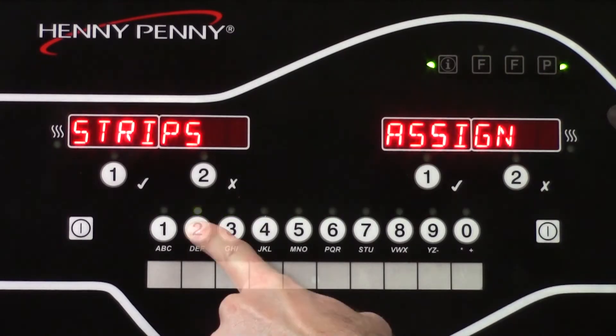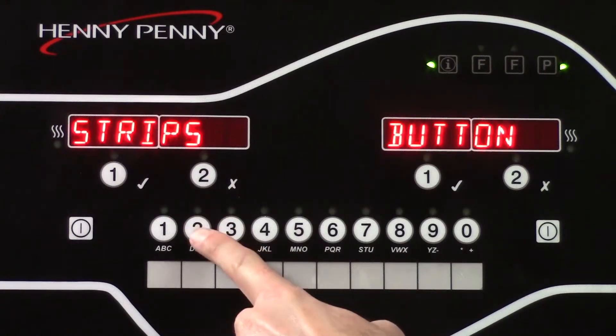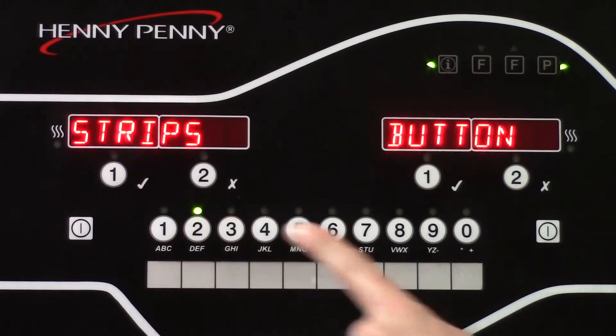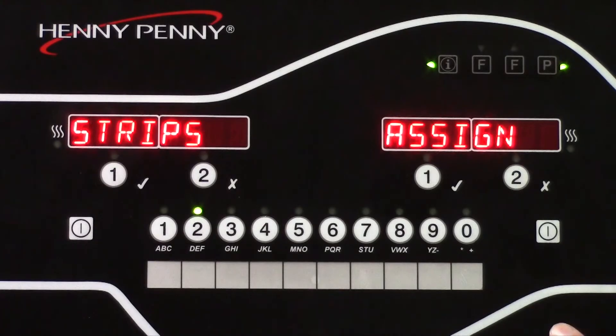Next, we are going to assign a button. For this example, we said that we are going to program strips to button number 2. So all we are going to do is press and hold button number 2, and then the light is lit above button number 2. Once that light is lit, that tells us that now strips is programmed to button number 2.